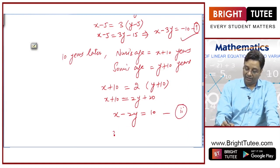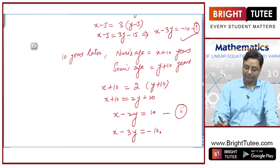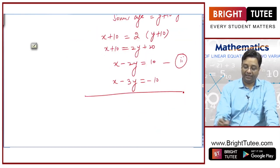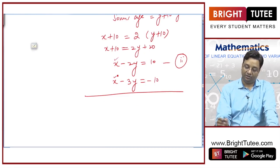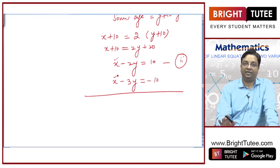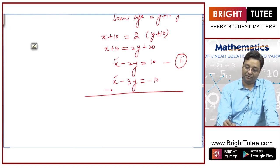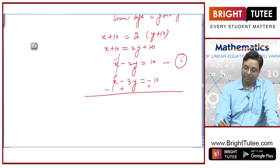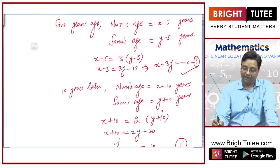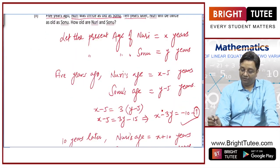Let me write equation 1: x minus 3y equals minus 10. Now, subtracting: I have got the coefficient of x equal in both equations, so I will simply subtract. Changing the signs: x gets eliminated, minus 2y plus 3y gives y, and 10 plus 10 is 20. So, y is equal to 20.